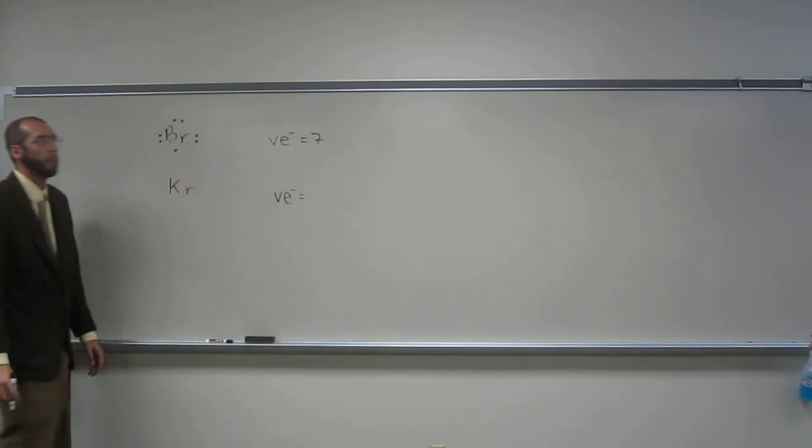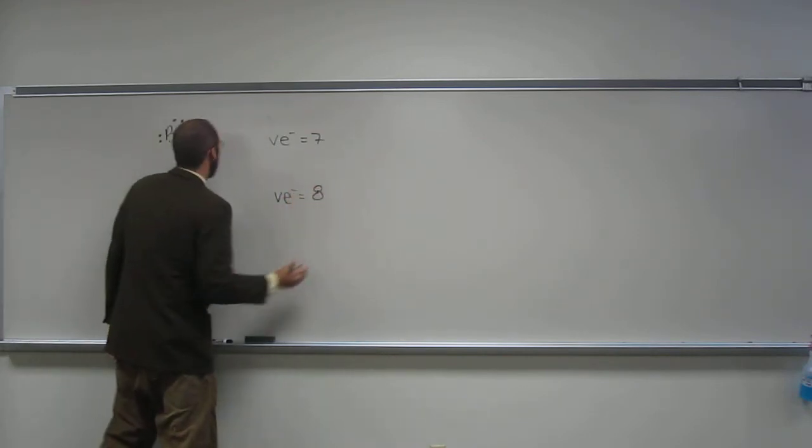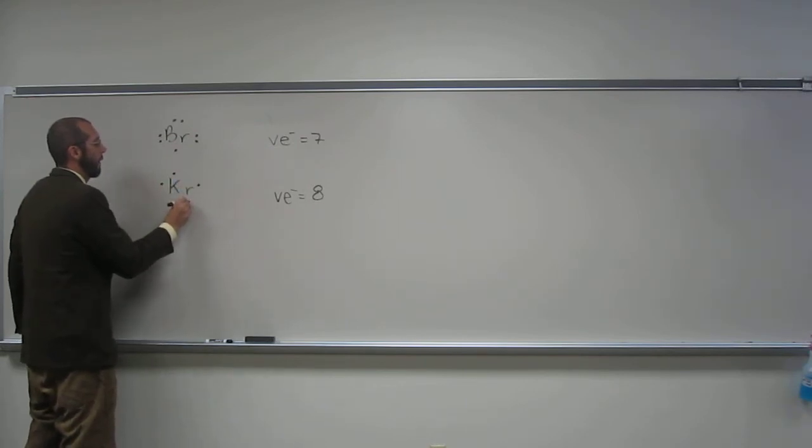How many valence electrons does krypton have? Eight. So we do a similar thing. One, two, three, four, five, six, seven, eight. Fairly straightforward.